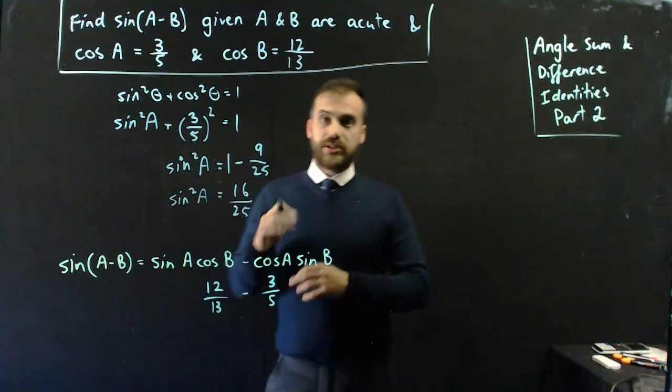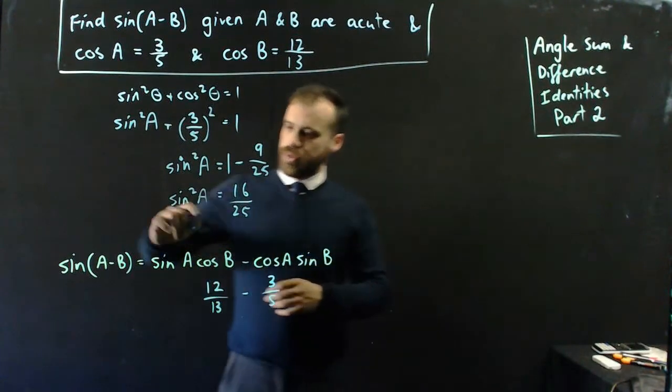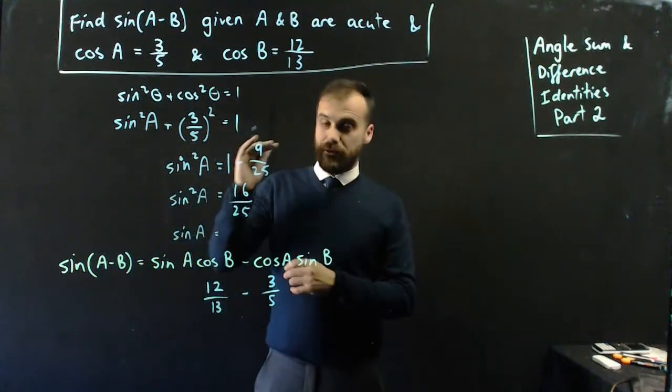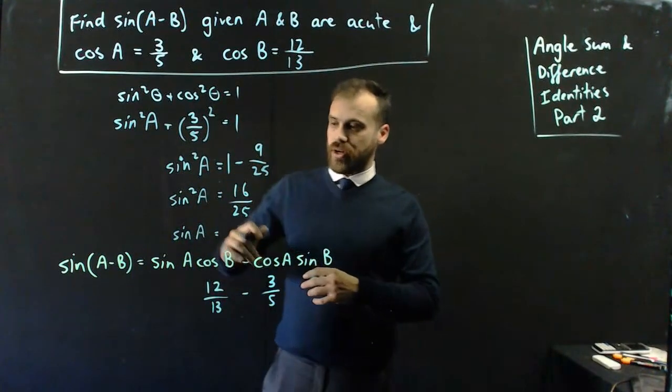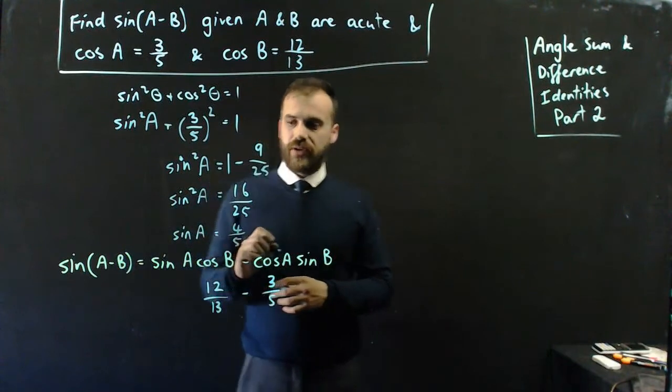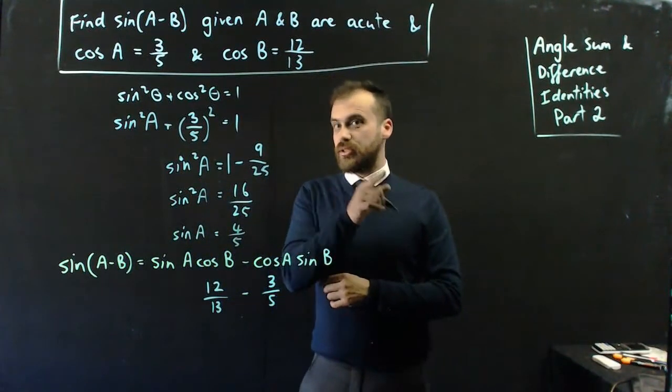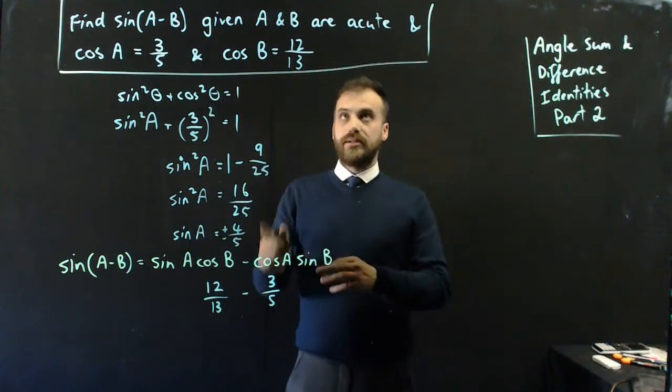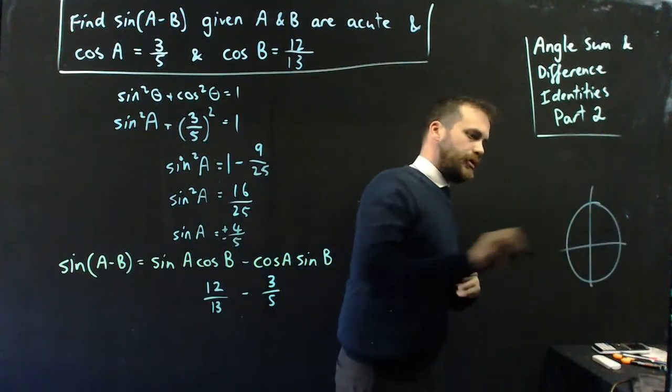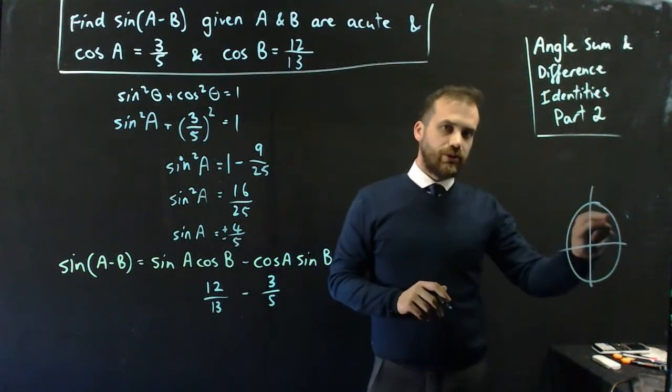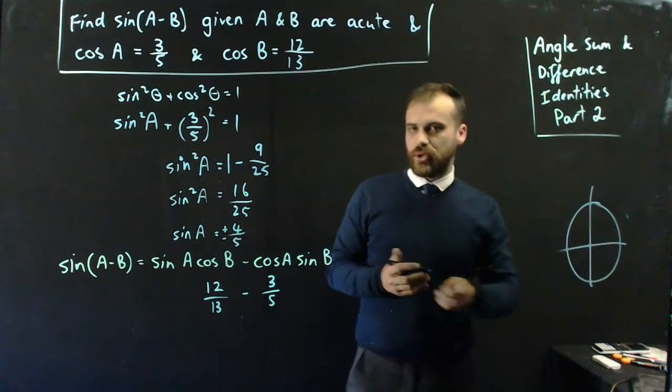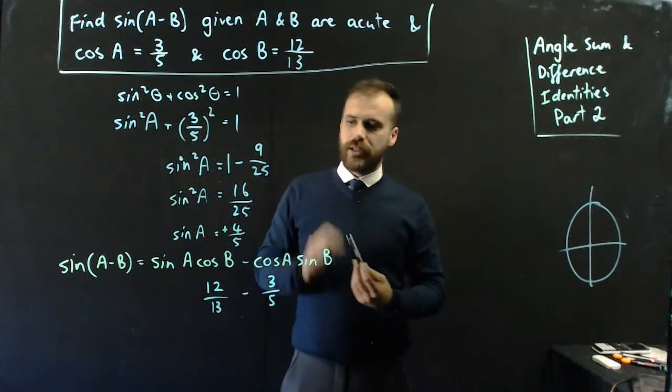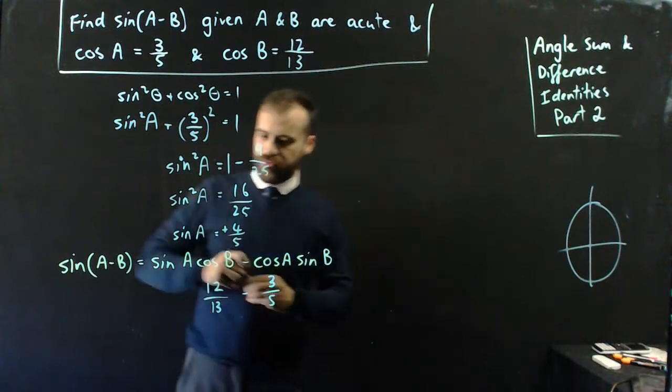Now, sine squared a is equal to 16 on 25, which means that sine a is equal to the square root of 16 on 25, which is 4 on 5. And you might be saying to yourself, but hang on, you did the square root, so it must be plus or minus, but a is acute. So, it must be in quadrant 1, and sine is positive in quadrant 1, so only positive. Sine a is 4 on 5.